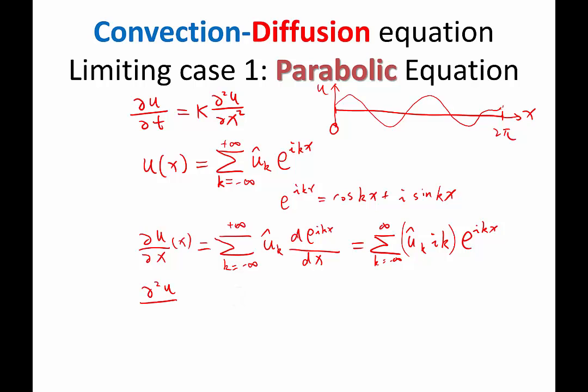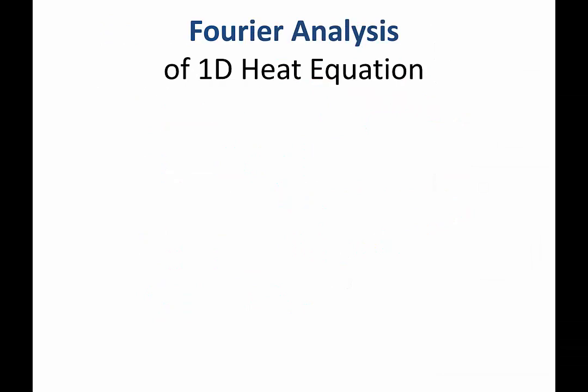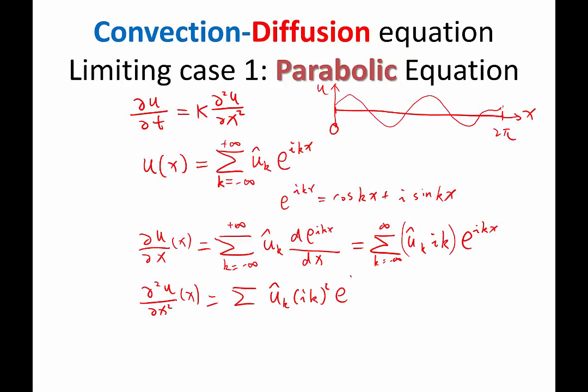How about the second order derivative of u with respect to x? It's basically doing that again. It's doing that again. So what I get is another infinite summation of u k hat of i k squared times e to the i kx. And what is i k square? i k square is minus k square because i square is minus 1. Minus k square, u hat of k, e to the i kx. Third derivative multiplied by i k again. Fourth derivative multiplied by i k again. So good.